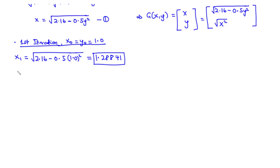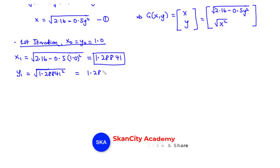Now for y1, it is the square root of x squared. Because we are doing Gauss-Seidel iteration, we substitute the most current updated value of x, which is x1 = 1.28841. So y1 equals the square root of 1.28841 squared. The square cancels the square root, giving y1 equals 1.28841.